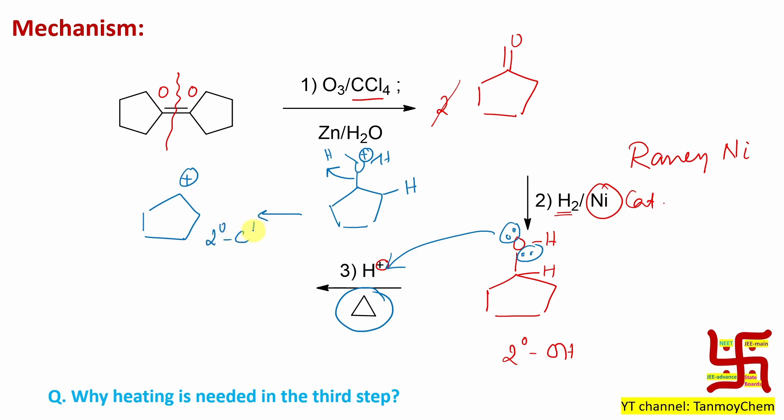By the way, this is one beta carbon, this is one beta carbon. Four total beta hydrogens exist. So one of them will be eliminated in this way. Means H+ will be removed.